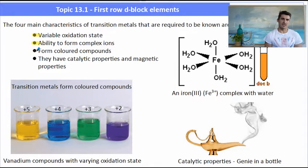The four main things we need to know about transition metals are their variable oxidation state, their ability to form complex ions and one of those is on the right hand side, why they form colored compounds and why they have some catalytic properties and we will talk about those in this video.